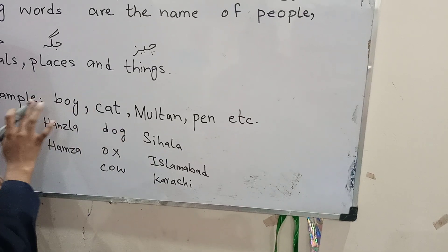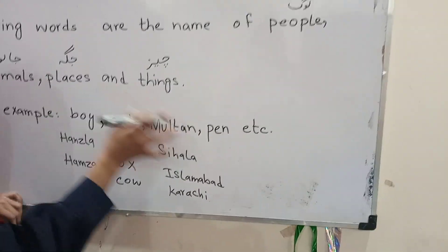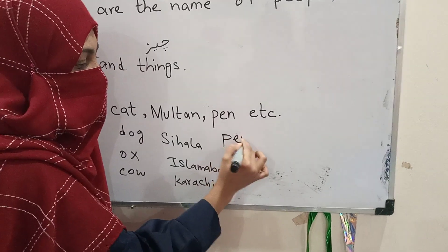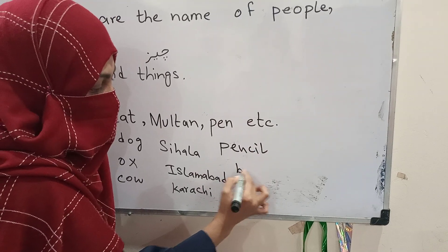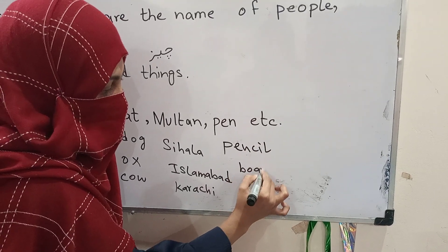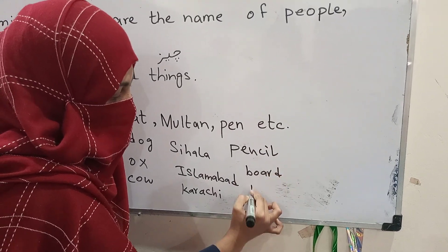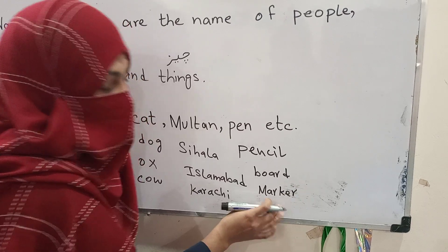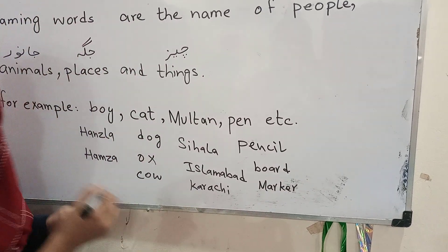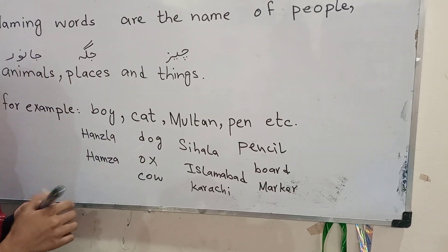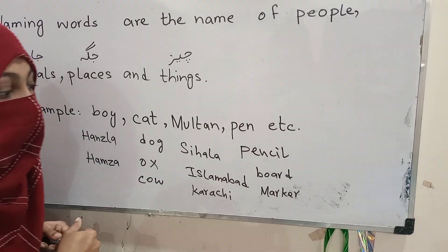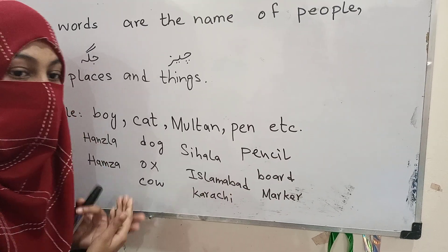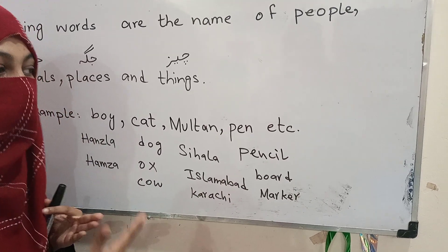Har place ka apna specific naam hota hai, jisai hum noun kehte hain. Things: pen, pencil, board, marker — yeh sab mukhtalif chizou ke naam hain. Jaisi yeh marker hai, yeh board hai, isi tarah pen, pencil.